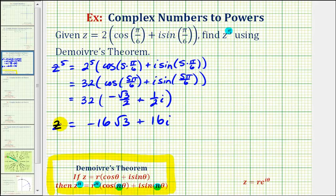So, this would be our complex number, raised to the fifth power, using de Moivre's theorem.